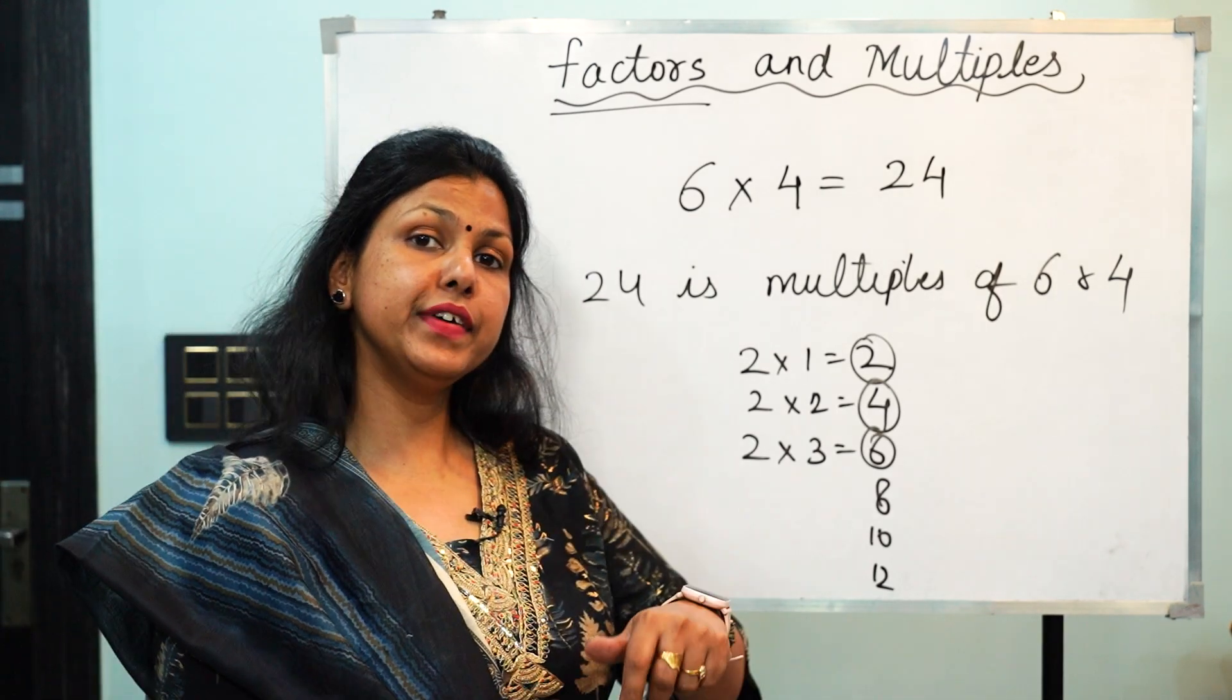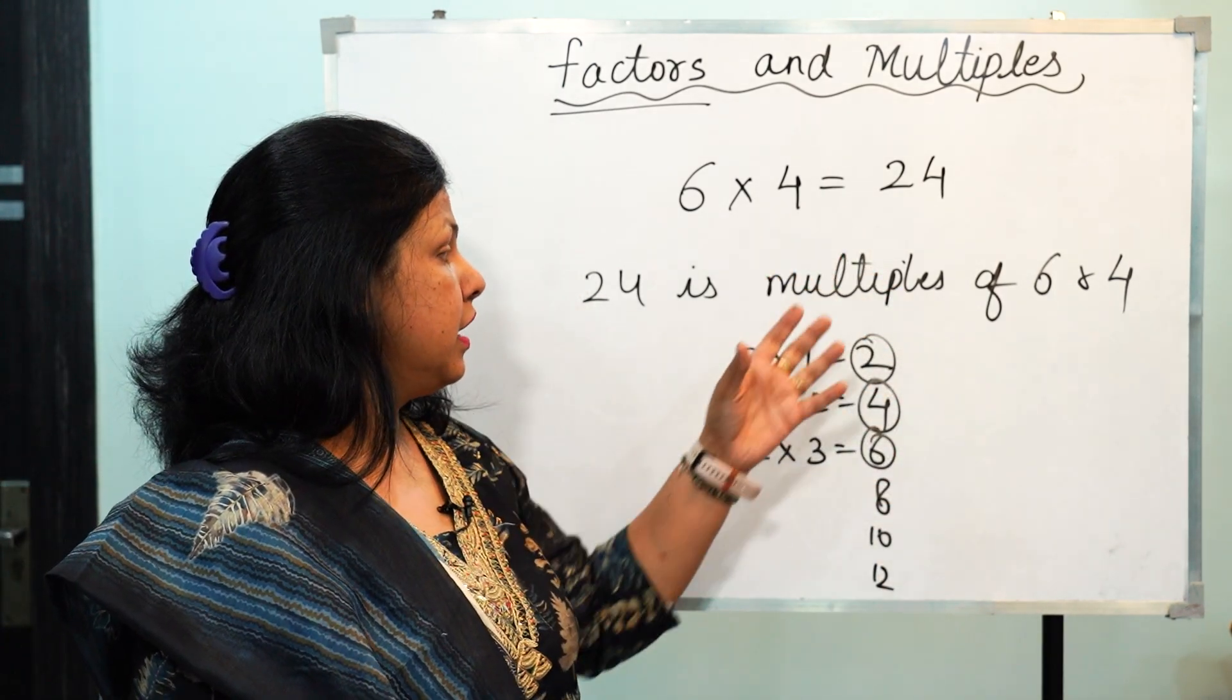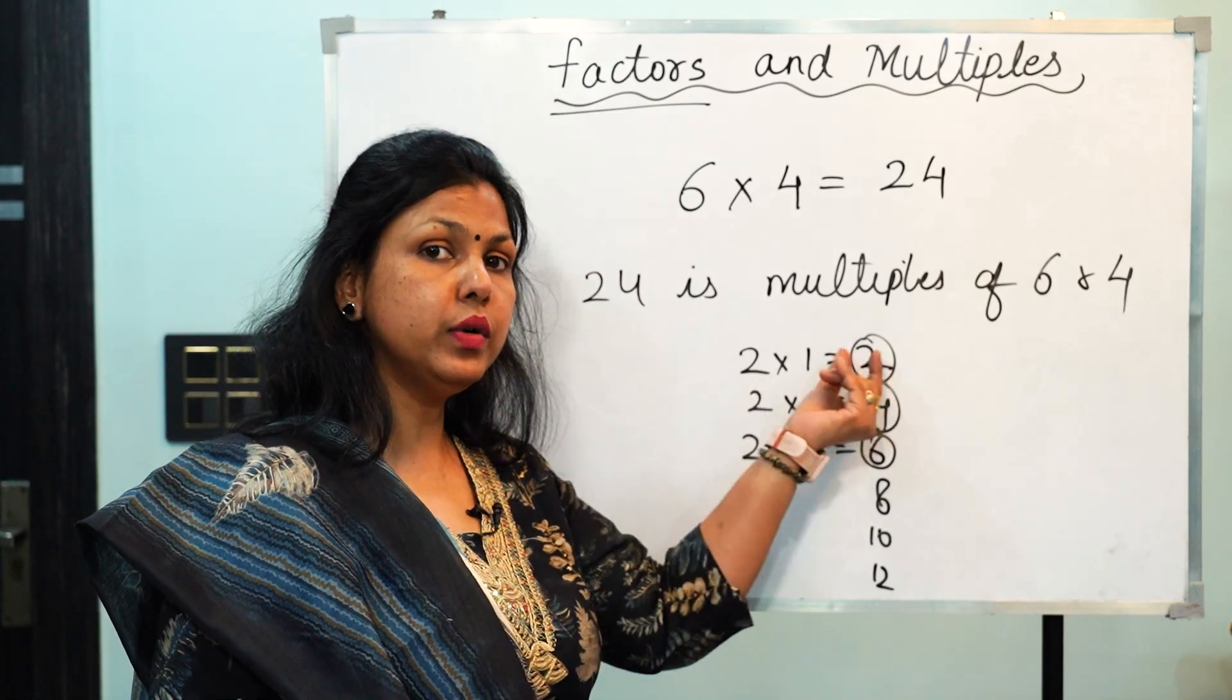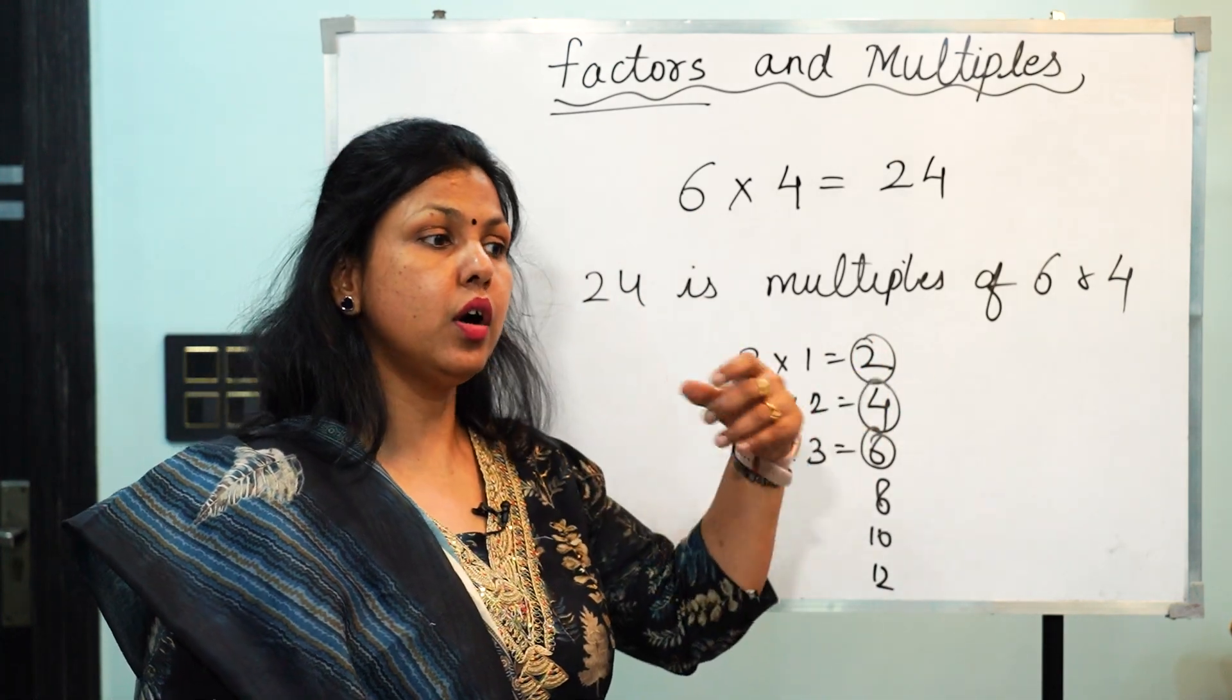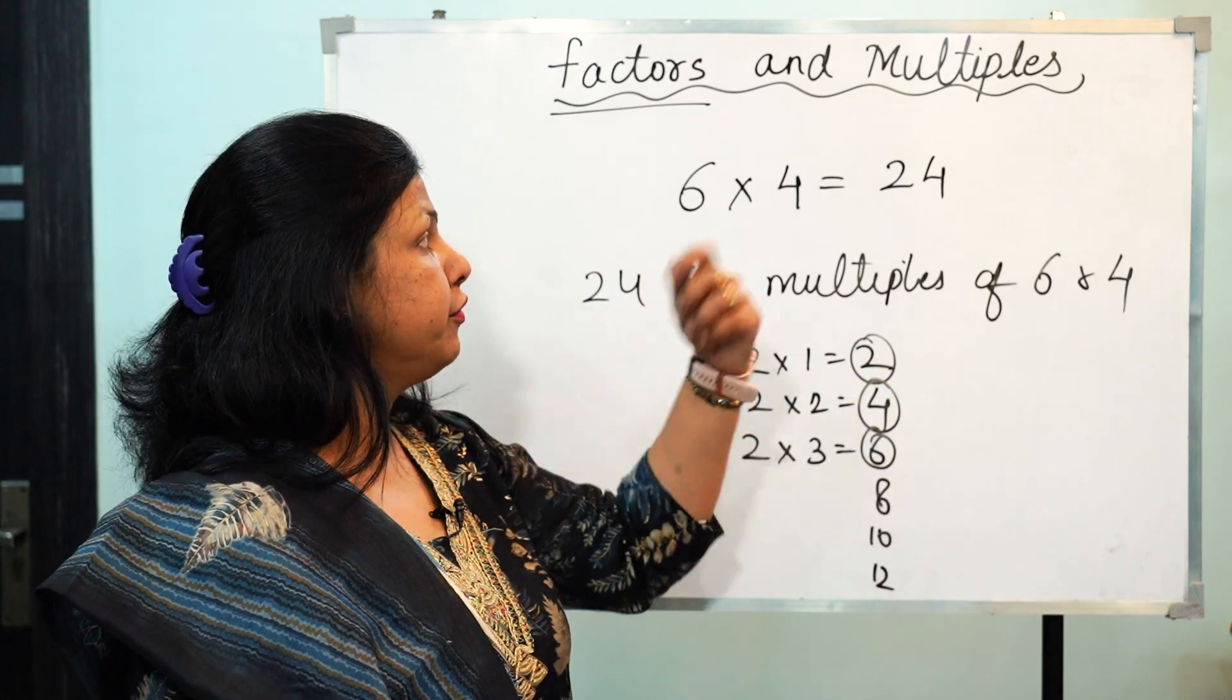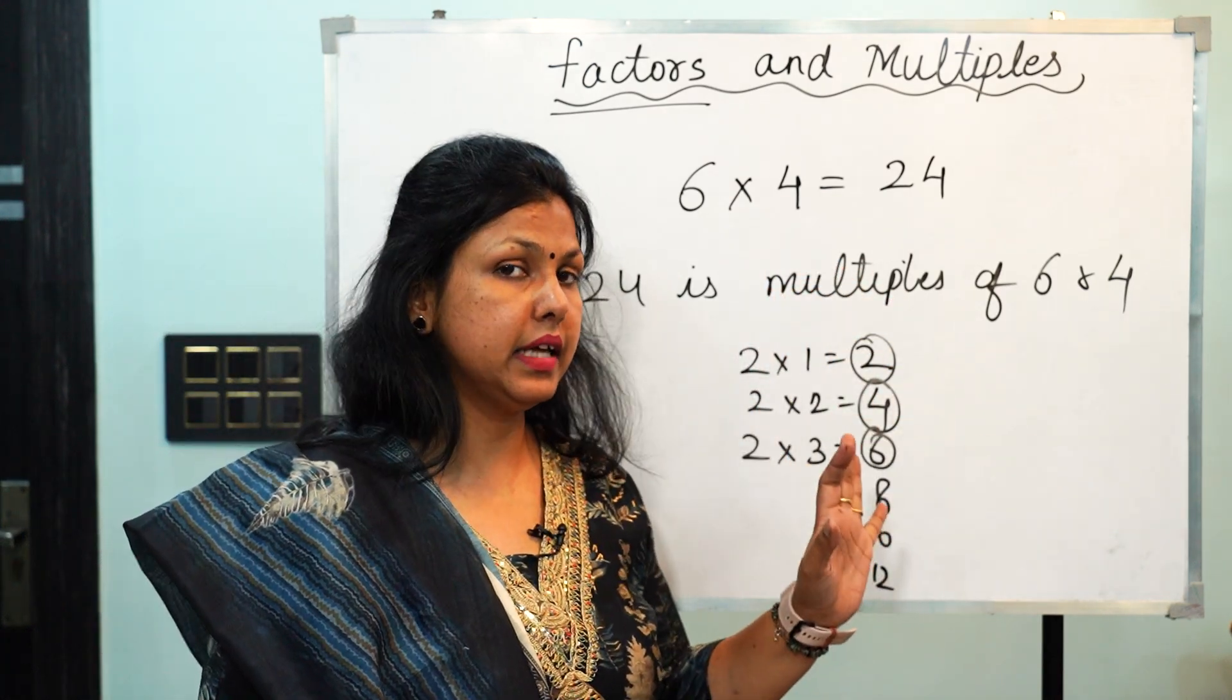So children, multiples are always bigger than the number. Multiple of 2 is equal to or bigger than 2. Multiple of 6 will be equal to or bigger than 6. Multiple of 4 will be equal to or bigger than 4.